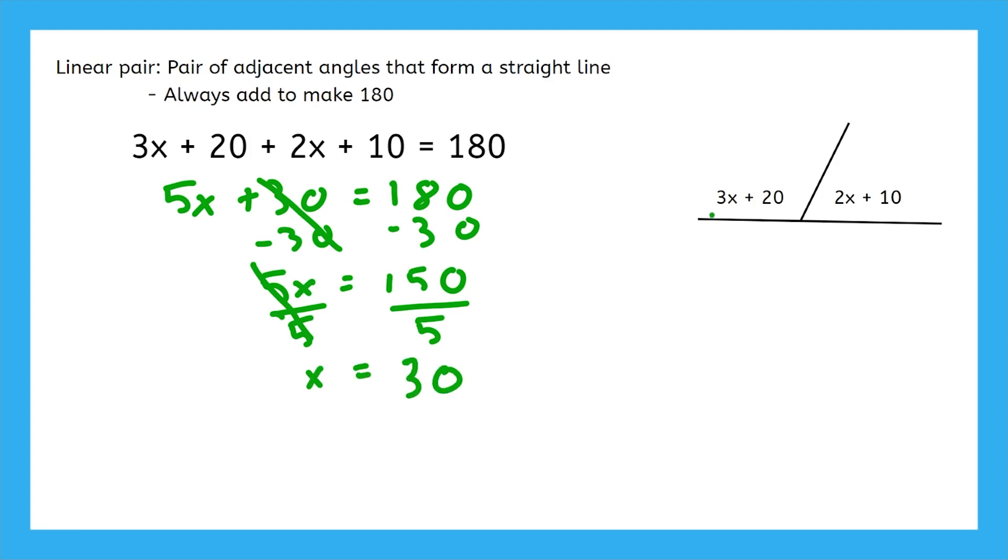So let's check it. If we plug 30 into both angles, the left angle comes out to 110, and the angle on the right comes out to 70. Those two numbers add to make 180, just like they were supposed to because this is a linear pair.